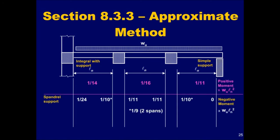Coefficients for the negative moments at the faces of the supports are illustrated for the case where there is a spandrel support and a column support. Note that when calculating negative moments, L sub N is taken as the average of the adjacent clear span lengths.